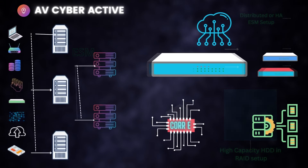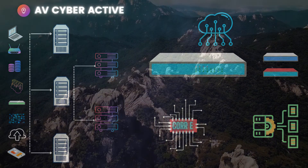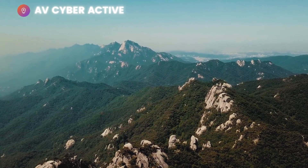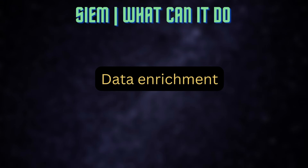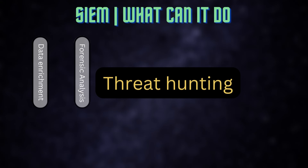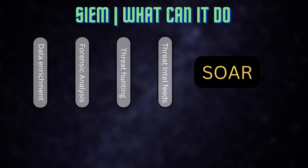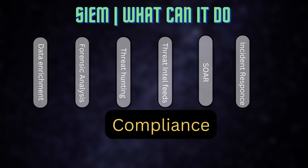Overall, this is the basic architecture for any SIEM and will have at least these components, irrespective of the vendor. Modern next-generation SIEMs have gone beyond just correlation and alerting, but the basic functionality remains the same. To name a few: data enrichment for logs, forensic analysis to collect evidence, threat hunting for threat investigators, consuming threat intelligence feeds from open sources, SOAR (Security Orchestration and Automated Response) to automate actions based on rules, incident response with built-in triage functions, and maintaining compliance data like PCI DSS, HIPAA, etc.